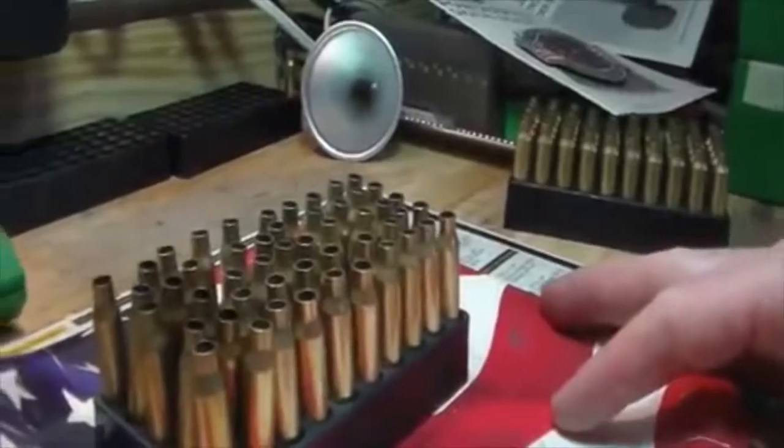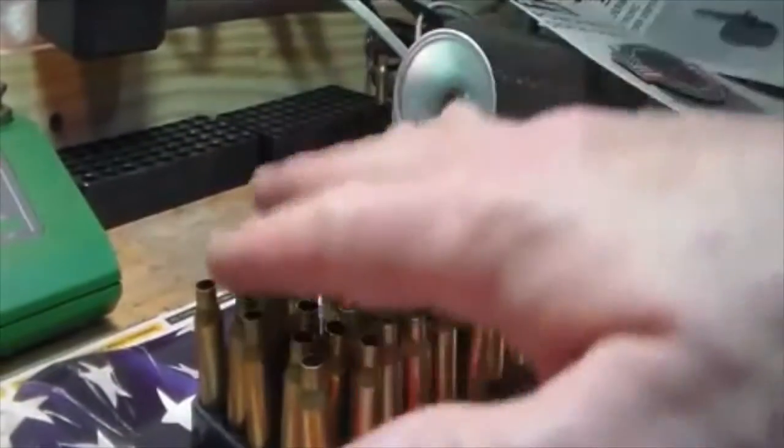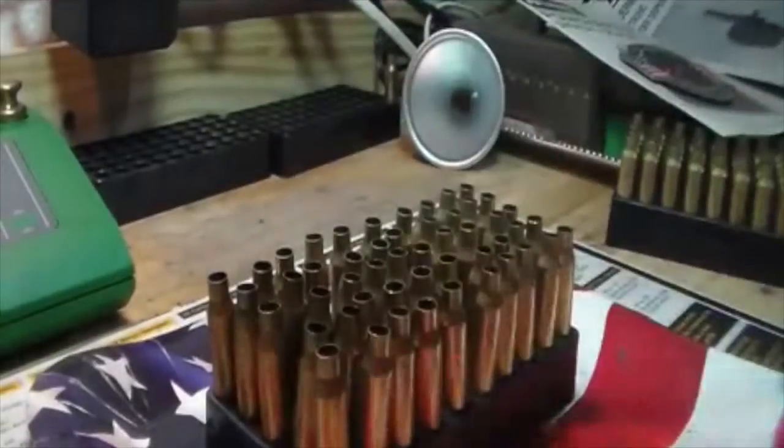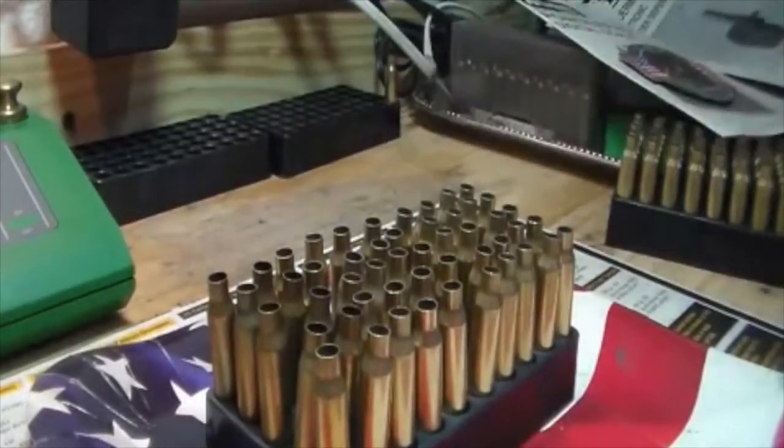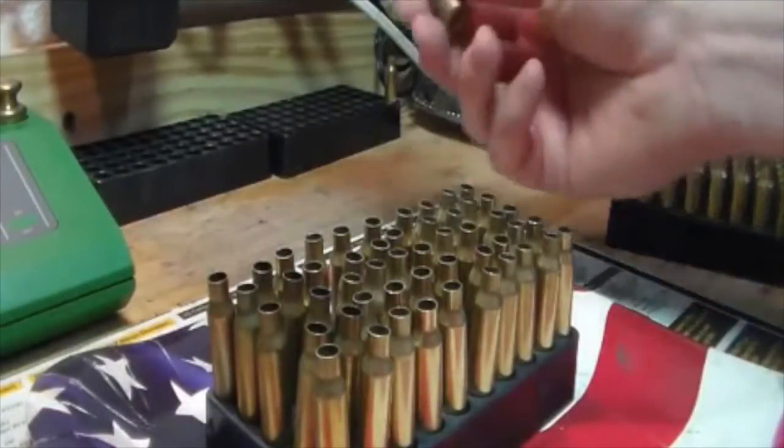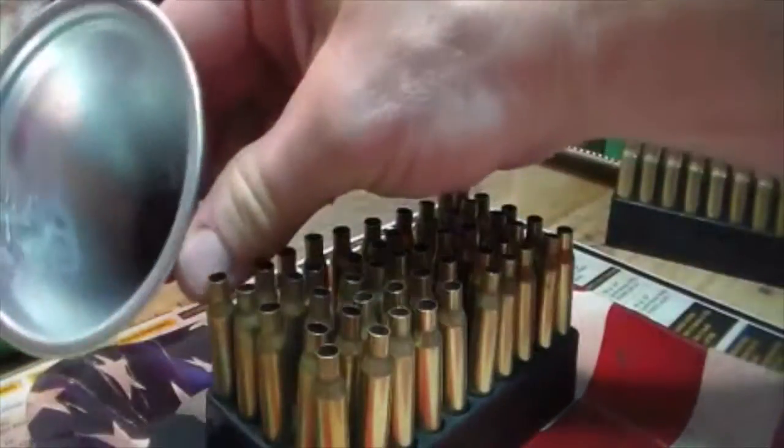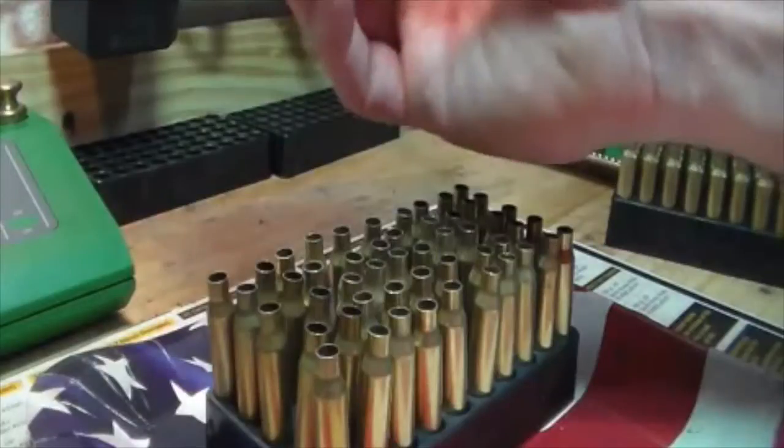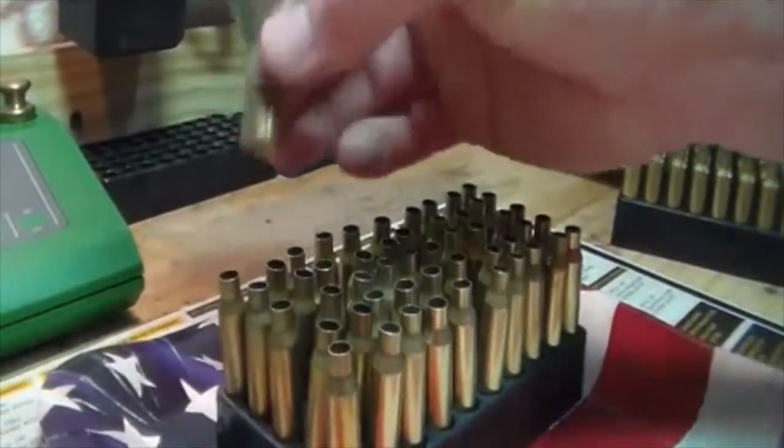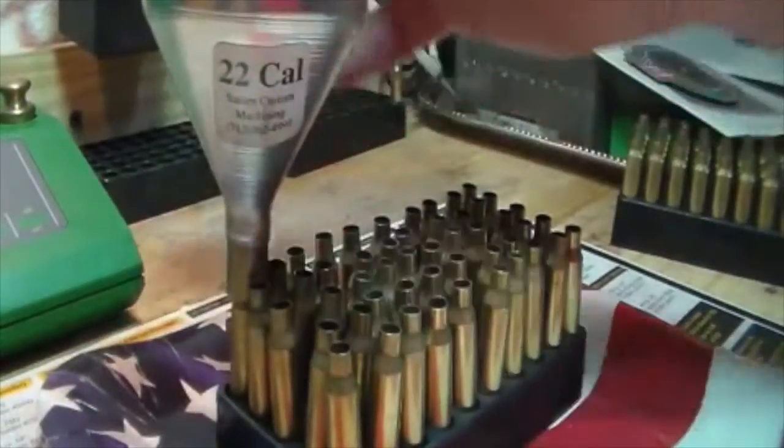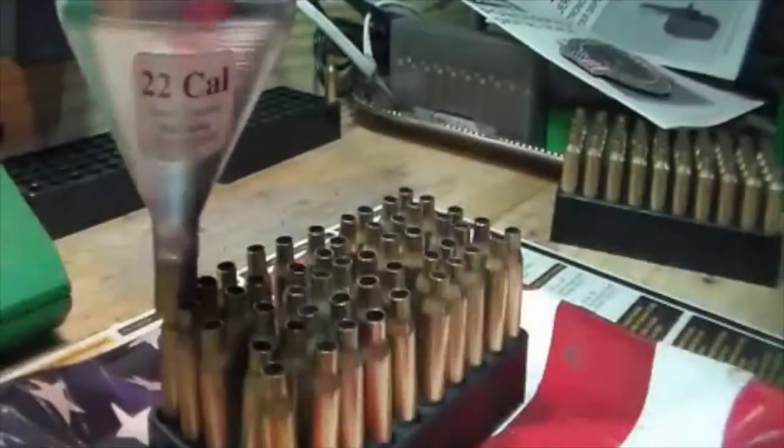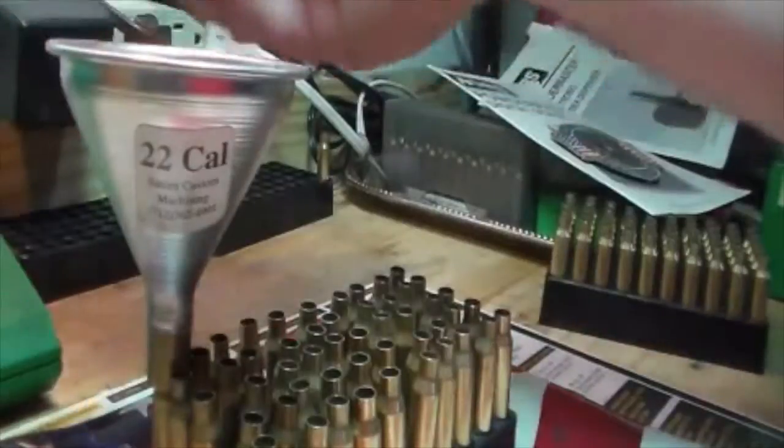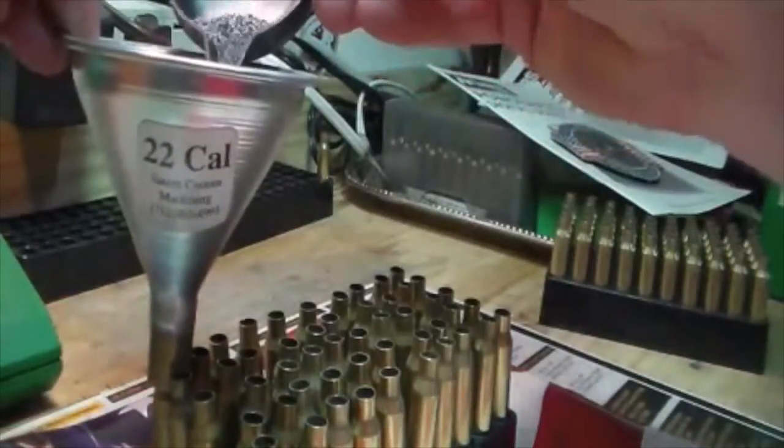Put the cases here on the paper plate so if I get a double charge or I spill some powder, I can take that powder, put it back in the scale. And what I use, I use a Satern, it's an aluminum funnel. It does a lot better job than the plastic funnels that come with most reloading cases because those build up some static electricity.